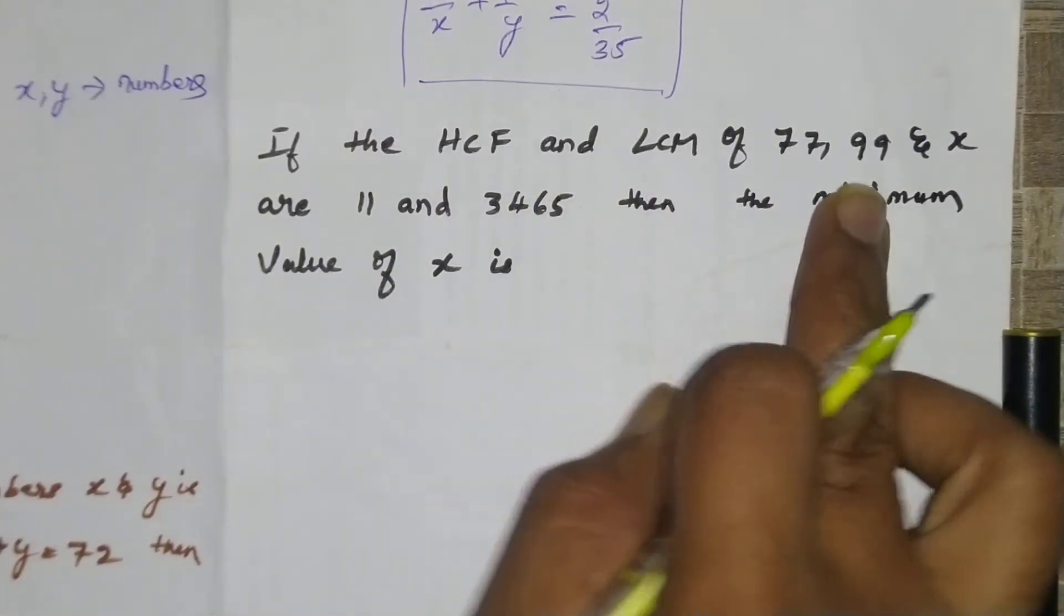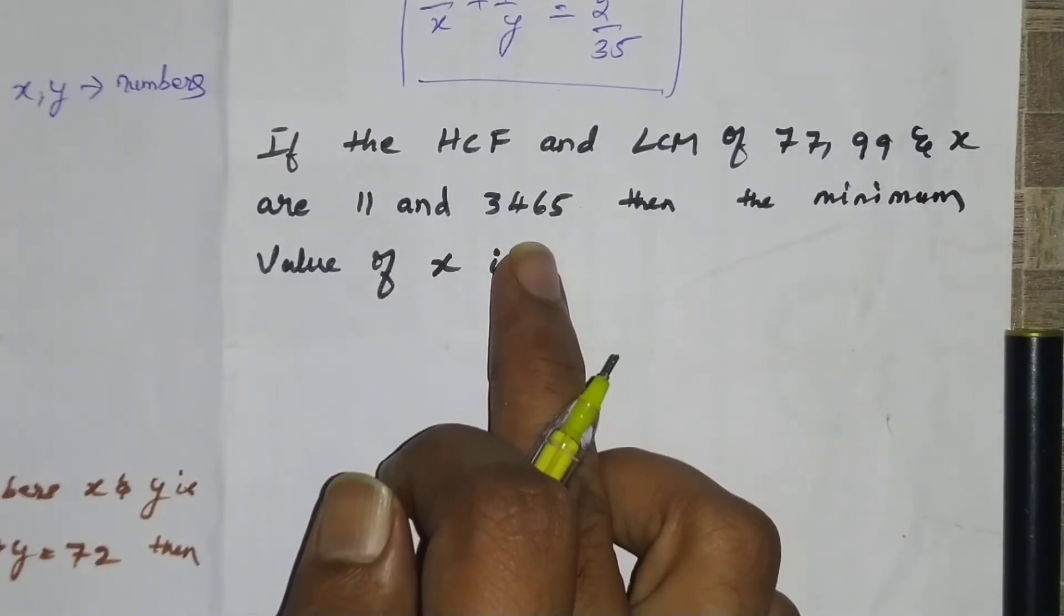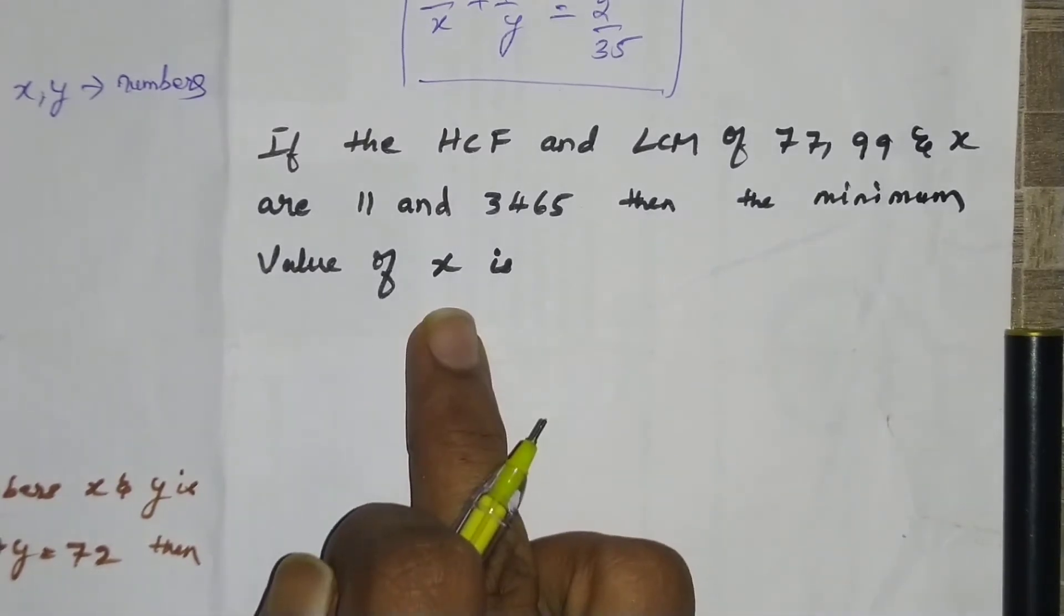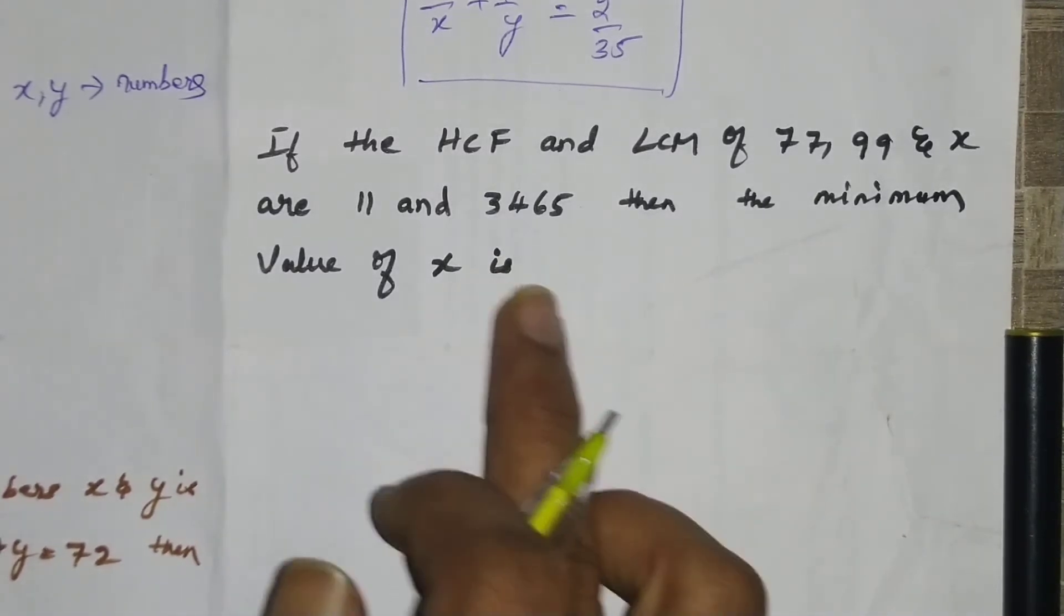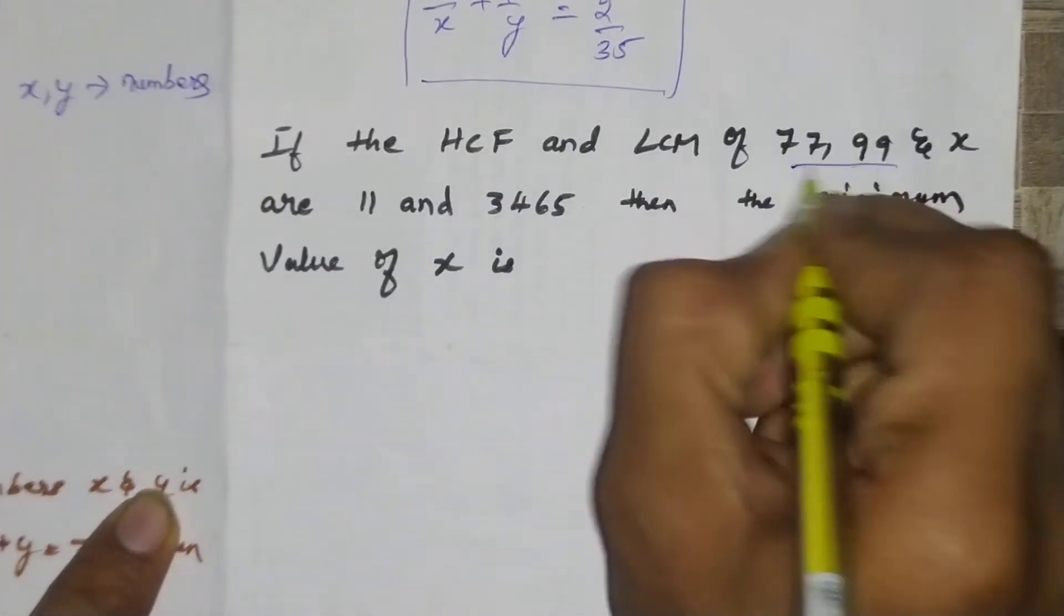The value of 1/x plus 1/y is 2/35. Our next question is: if the HCF and LCM of 77, 99, and x are 11 and 3465, then the minimum value of x is? We have to find the value of x, so we take the factors of 77 and 99.